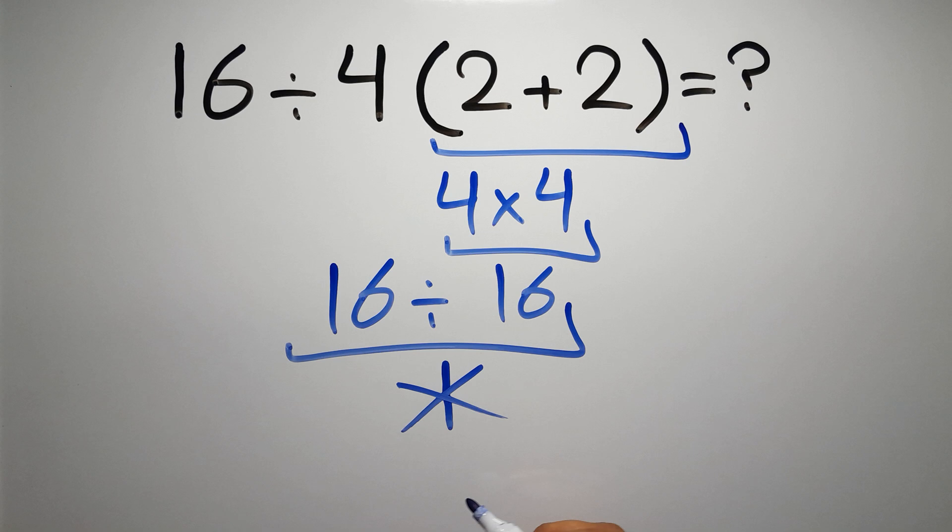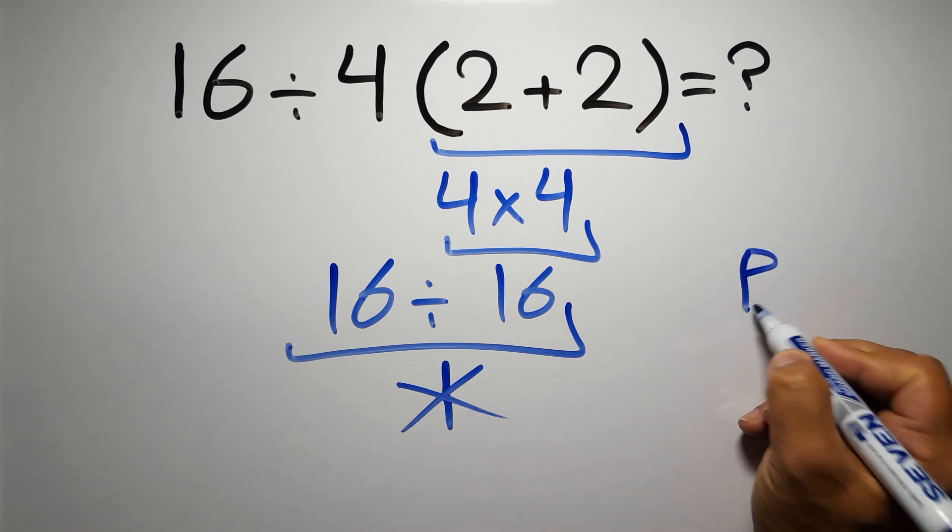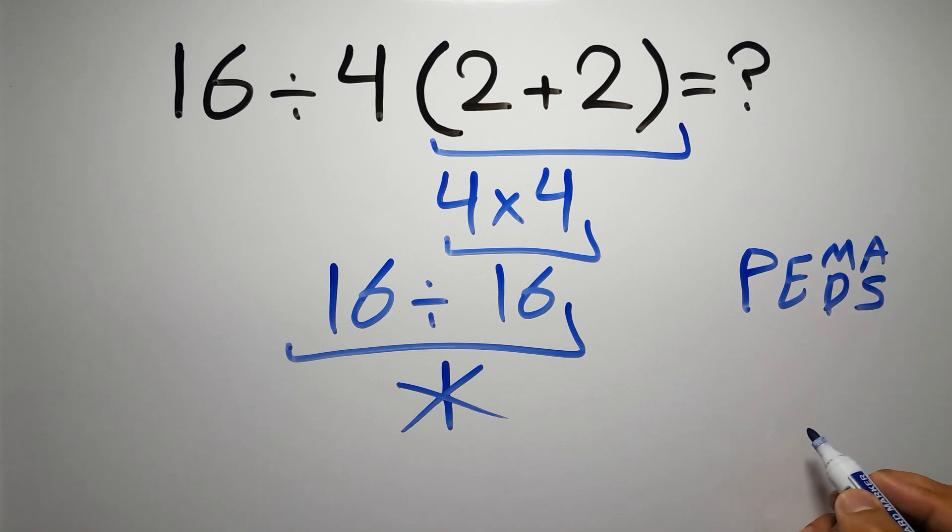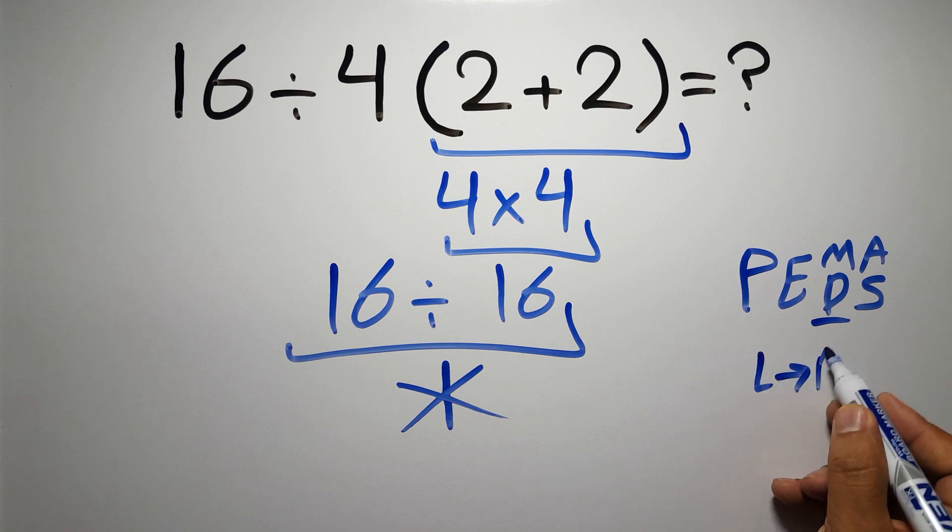Because according to the order of operations, first we have to do parentheses, then exponents, then multiplication or division, and finally addition or subtraction. Remember that multiplication and division have equal priority, and we have to go from left to right, and the same applies to addition and subtraction.